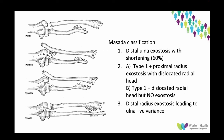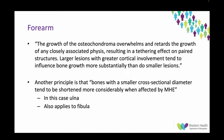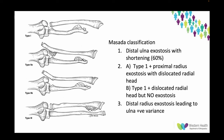Masada described a classification to help guide management. Type 1 — distal ulnar exostosis with shortening — is the most common, where the radius maintains length. Type 2 is when you see radial head dislocation: Type 2A has a proximal radial exostosis and Type 2B does not. Type 3 is when you have an exostosis on the radius with a relative ulnar-positive variant.